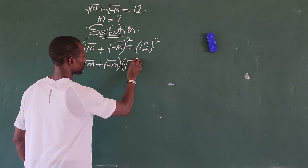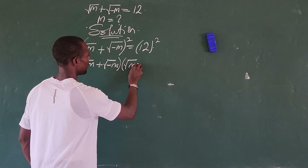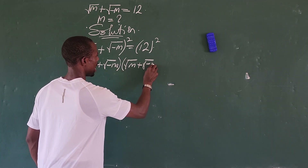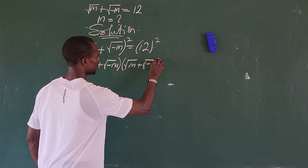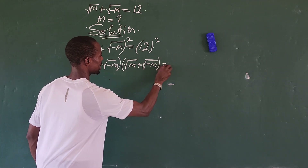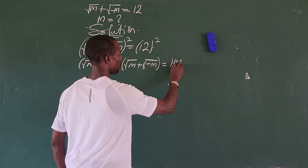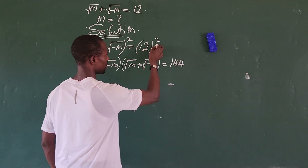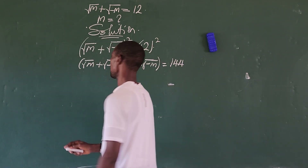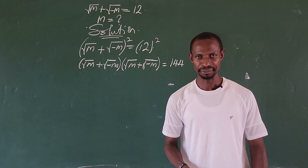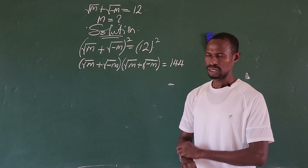That equals the square of 12, which is 144. So we're expanding: square root of m, plus square root of minus m, all multiplied by itself. Good — let's open the bracket gradually.